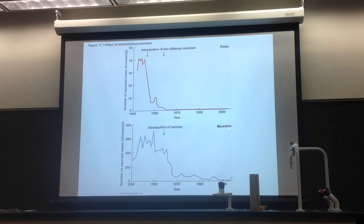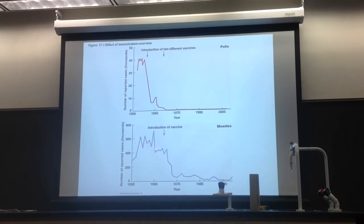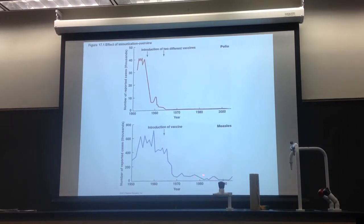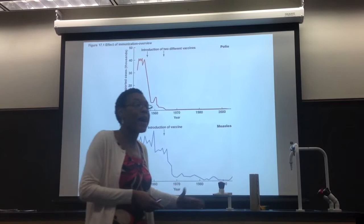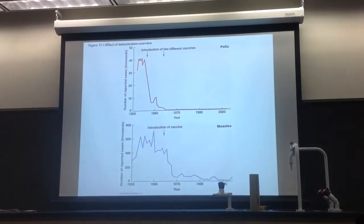Now let's look at measles. In the 1950s, 60s, even into the 70s, there were 200,000 to 400,000 cases. A lot of people got measles back then. After the vaccine was introduced around 1960, there was a sharp decline. Measles is not totally eradicated in the U.S. — there's still a low prevalence — but the dramatic reduction is all due to vaccination.